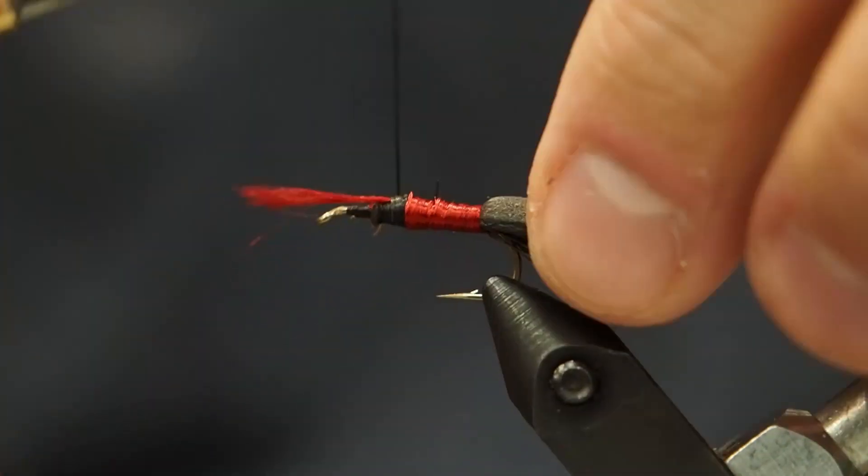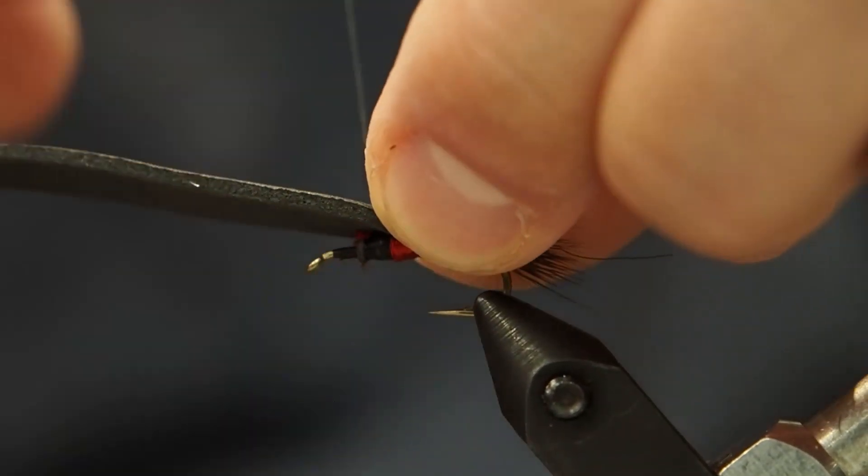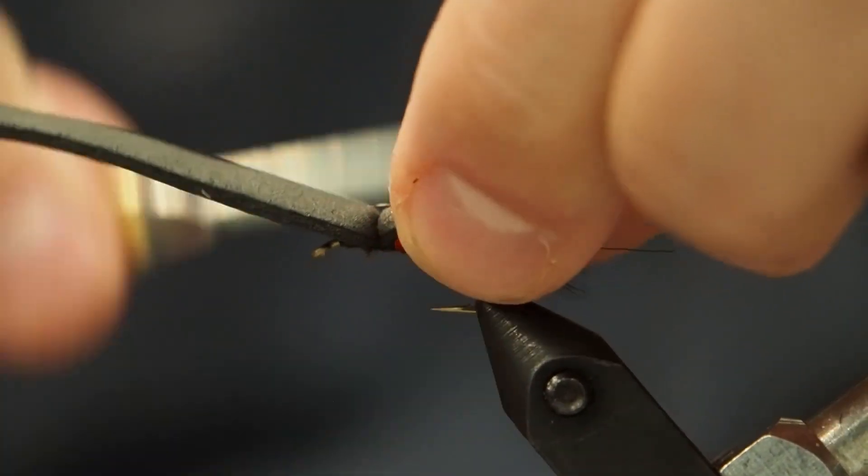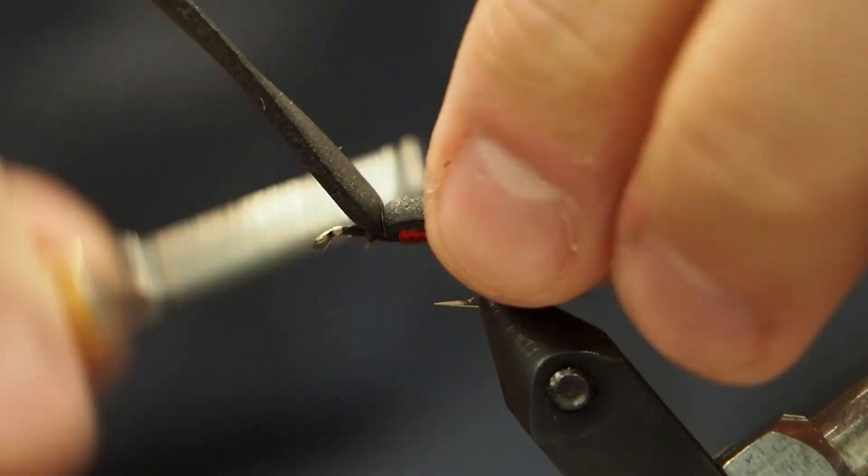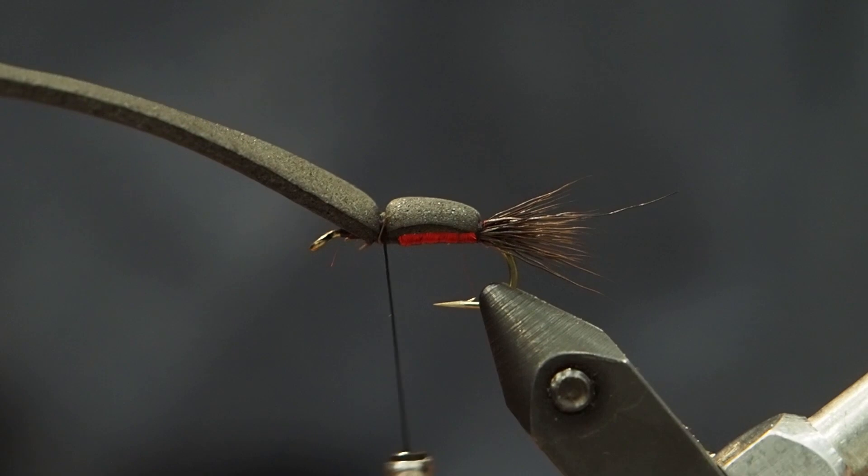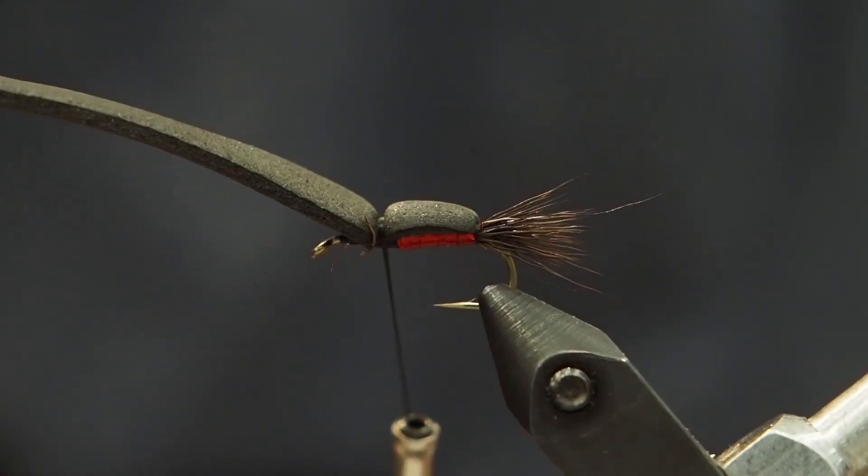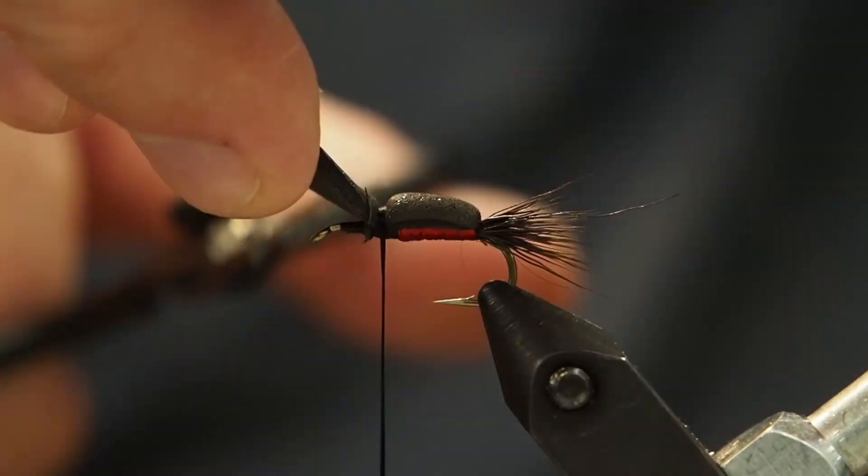Now we're going to pull the foam over, and I have cut this foam fairly thick because I want it to wrap around and kind of give a beetle-like body profile. Humpies are excellent attractor patterns for terrestrial insects, and we use them often as a beetle kind of pattern. You can see the thickness of the body there. I'll clip that off and lock down the remaining part of the foam there.